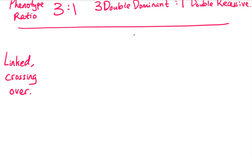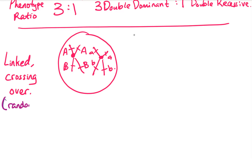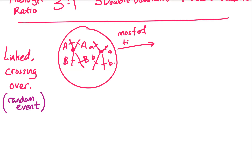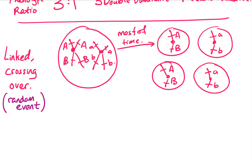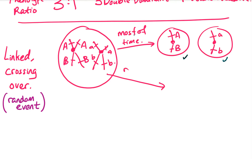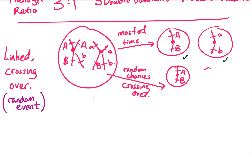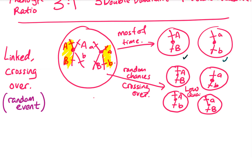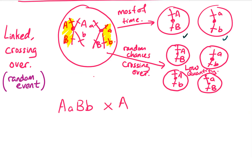Now let's look at the scenario in which both gene A and gene B are linked, but crossing over can happen. Crossing over is a random event in which homologous chromosomes exchange gene segments, but this event happens quite rarely. So most of the time you still get Big A with Big B and little a with little b. But when crossing over does happen, the Big A allele will be on the same chromatid as little b, and Big B will be on the same chromatid as little a — because the gene segment between the homologous chromosomes flips around. These recombinant combinations occur rarely, so you have low quantities of them.